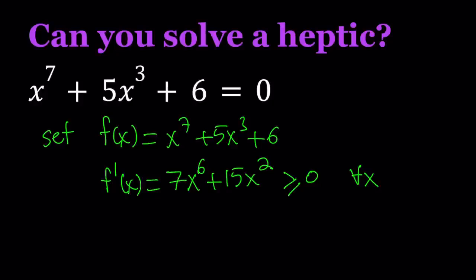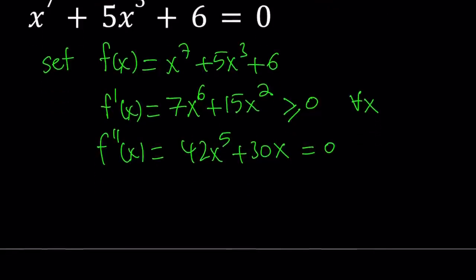Differentiate this one more time. And that gives us 42x to the power 5 plus 30x. Now, we can go ahead and set it equal to 0 to find the critical points. And from here, of course, we could do the same thing with the first derivative, and we would get 0 as well.